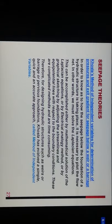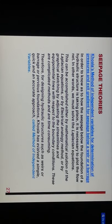Khosla's method is of independent variables to determine pressure and exit gradient of seepage below weirs or barrages. In order to know how seepage below the foundation of hydraulic structures is taking place, it is necessary to plot the flow net. This can be accomplished by mathematical solution of the Laplacian equation, by electrical analogy method, or by graphical sketching. These are complicated methods and time-consuming. Therefore, for designing hydraulic structures such as weirs and barrages on pervious foundations, Khosla has evolved a simple, quick, and accurate approach called the method of independent variables.